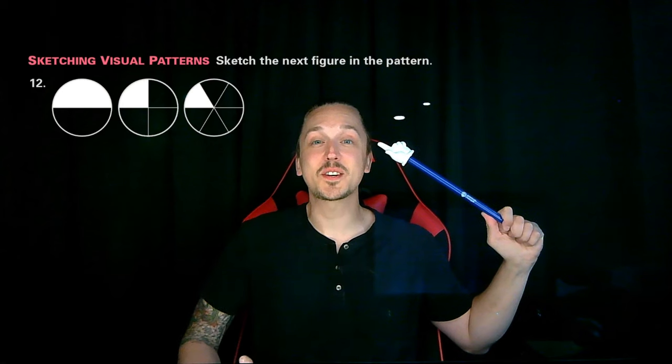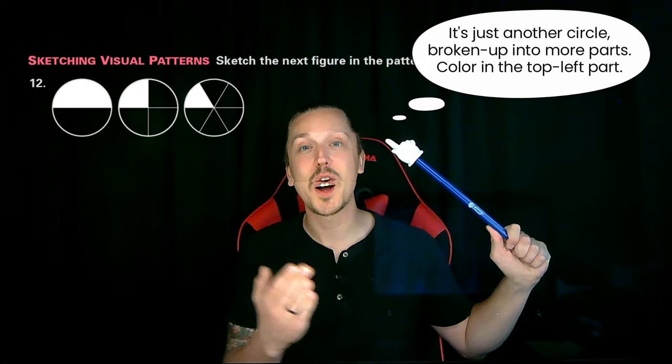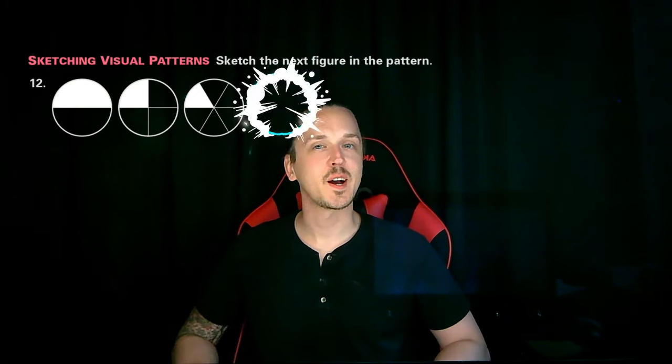Oh, I know! It's just another circle broken up into more parts where we're going to color in the top left part, right? Then I say, let's test that conjecture. First, I would ask you, what do you mean by more pieces?